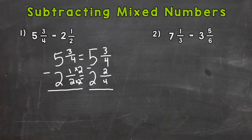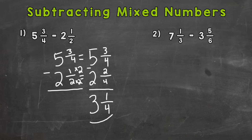Now subtract the fractional parts and then the whole number parts. So 3/4 minus 2/4 — well, 3 minus 2 is 1, keep our denominator of 4. Then do 5 minus 2, which gives us 3. Always look to see if the fractional part can be simplified. 1/4 is in lowest terms, so we are done. The answer to number 1 is 3 and 1/4.